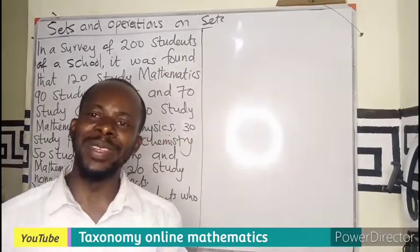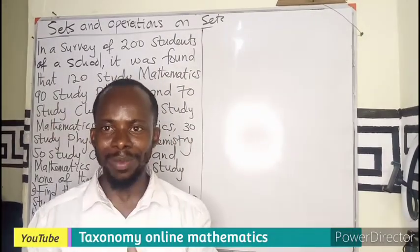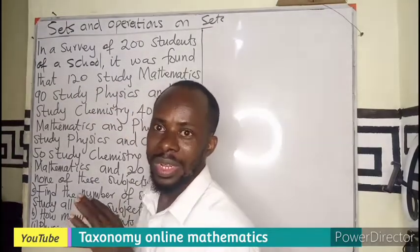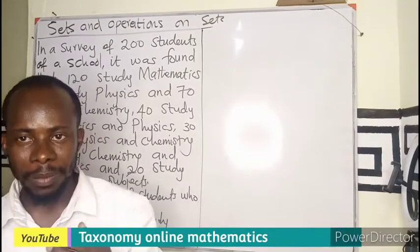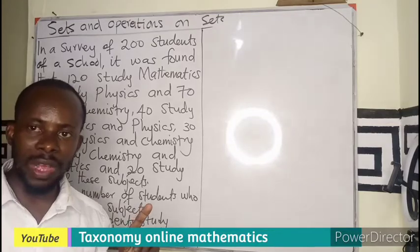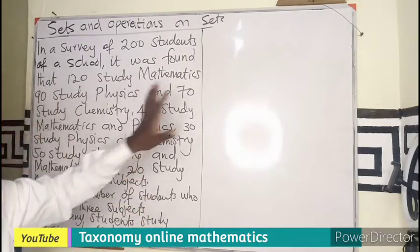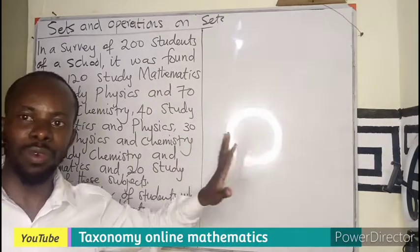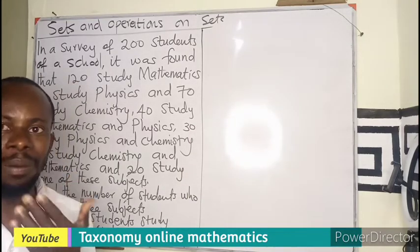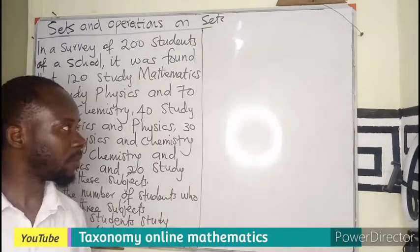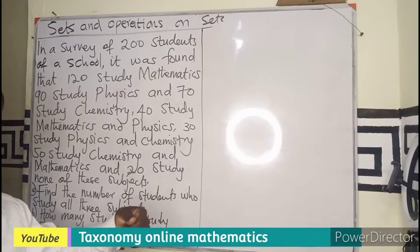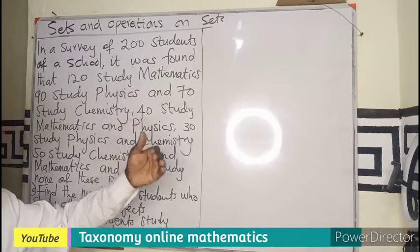Hello there, welcome to Tazonomi Online Mathematics. In this video, we are going to provide an answer to a three-step problem, which is type 2. We did a previous video on type 1, whereby the Venn diagram regions will be given to you, and you will be asked to use that diagram to find some regions or to answer questions. In type 2, you will be asked to find the three-set intersection.